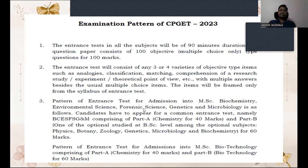Pattern of entrance test for admission into MSC Biochemistry, Environmental Science, Forensic Science, Genetics, and Microbiology. These candidates should appear for common entrance test, that is namely BCE, SF, SG, and M, comprising of Part A, that is chemistry which includes 40 marks. And Part B consists of one of the optional subjects at BSc level, such as physics, botany, zoology, genetics, microbiology, biochemistry.